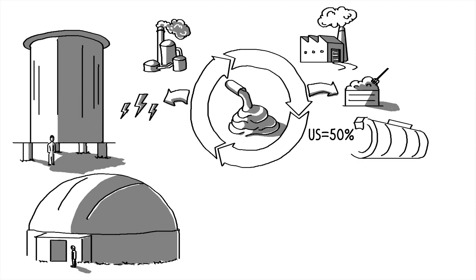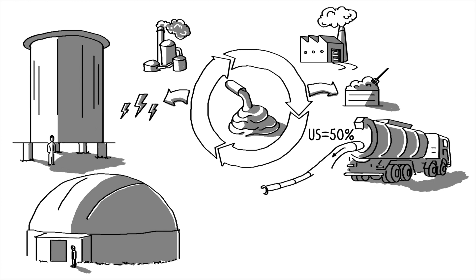About half of the sewage sludge produced in the U.S. is still hauled away for disposal. It ends up in landfills, where it generates greenhouse gases and air pollution, like methane, nitrous oxide, ammonia, and hydrogen sulfide.